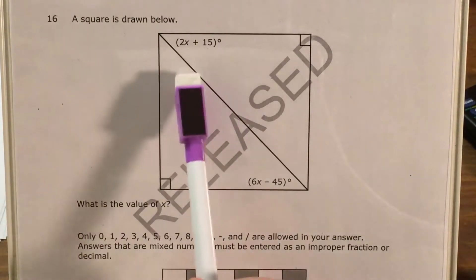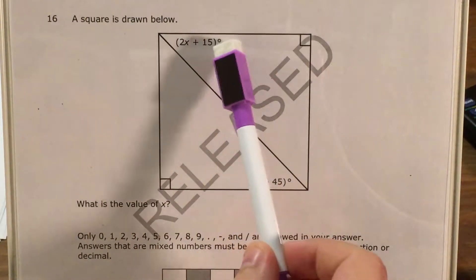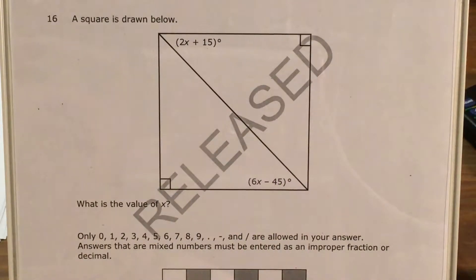The question shows us a square with a diagonal line and it tells us that this angle is 2x plus 15 degrees and that this angle is 6x minus 45 degrees and we're just supposed to find the value of x.